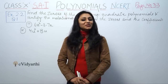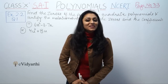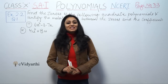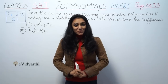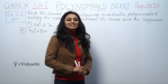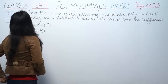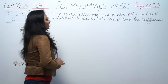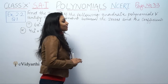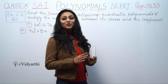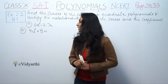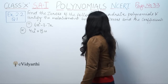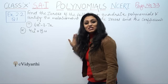Hi, this is Khushbu with another question on polynomials. This is question number 1 from exercise 2.2, page number 33 from NCERT. The question says: find the zeros of the following quadratic polynomials and verify the relationship between the zeros and the coefficients.